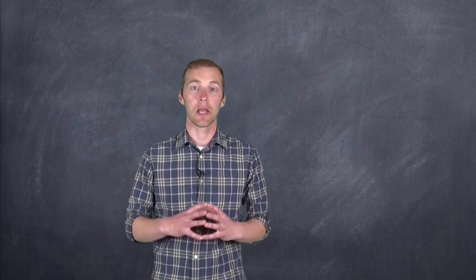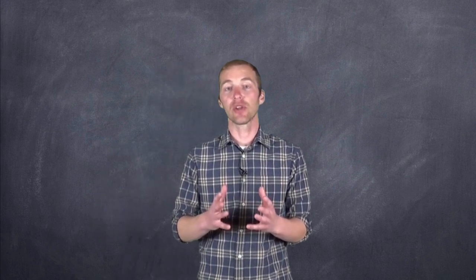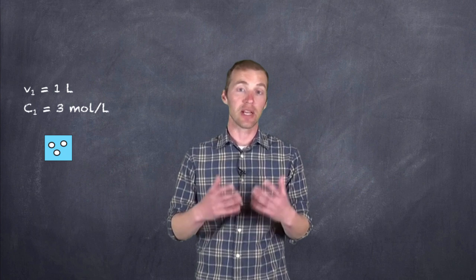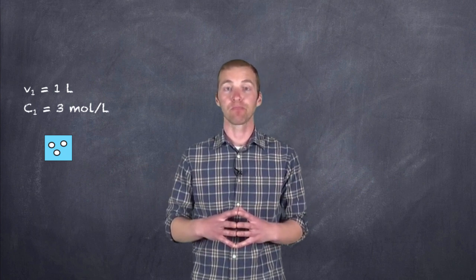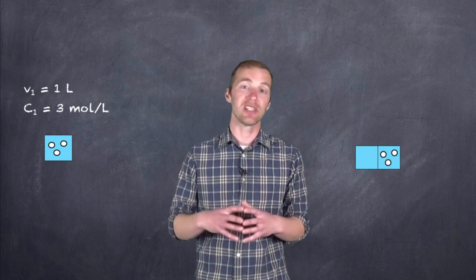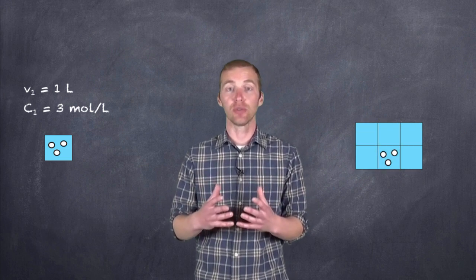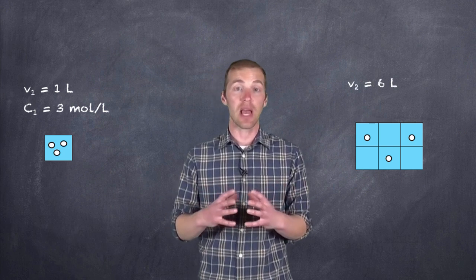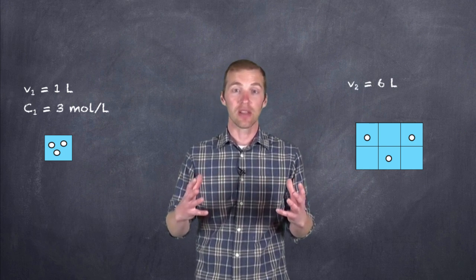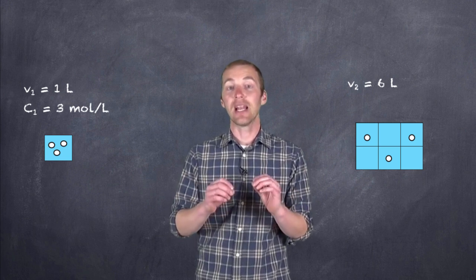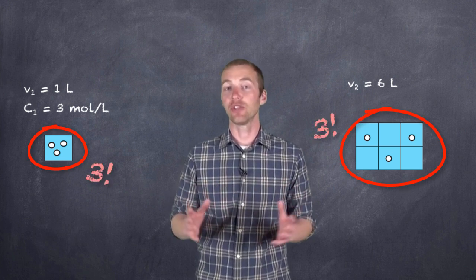Let's take a look at an example. So let's say we started with one liter of a solution that contained three moles of a particular substance. If we were to increase the volume, that is we were to dilute this particular solution to six liters, we could see that obviously what's happened is that we have increased the volume of this solution quite dramatically. But the number of moles of solute hasn't changed.